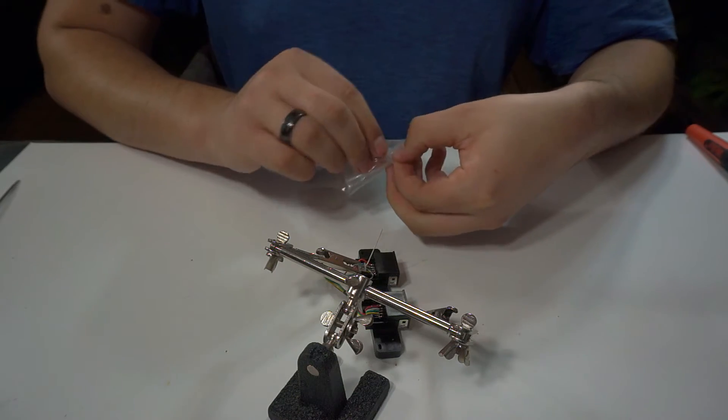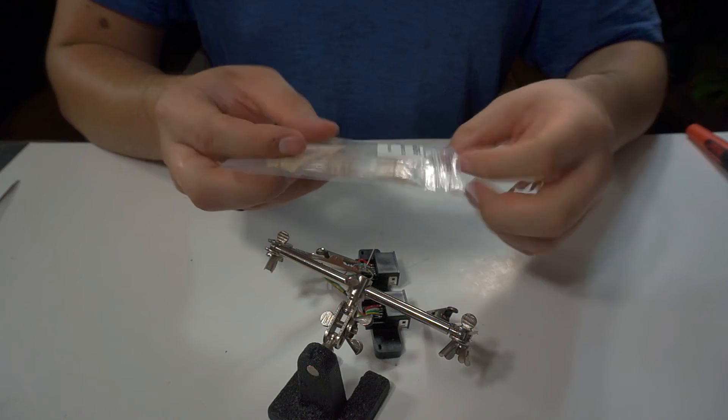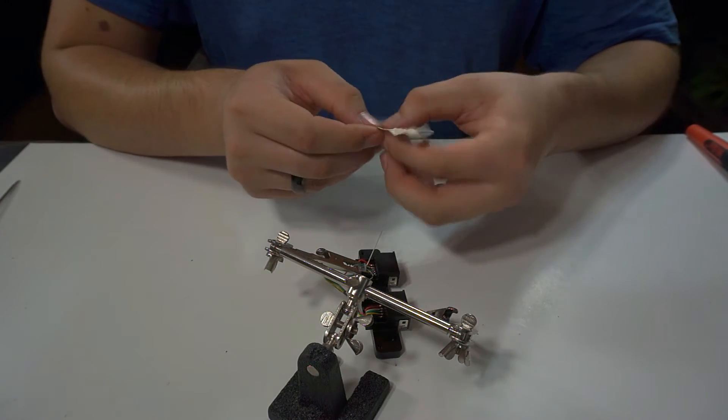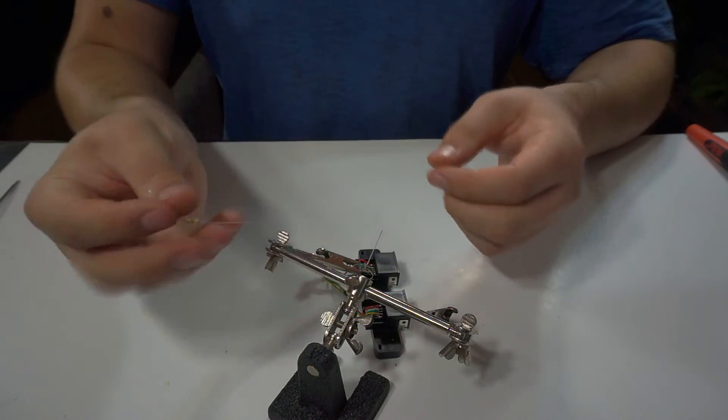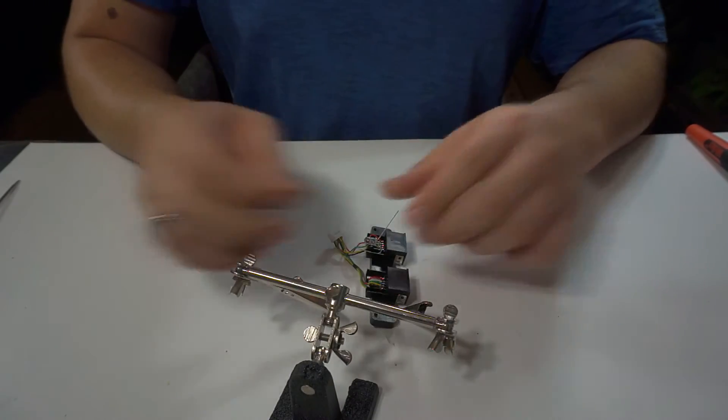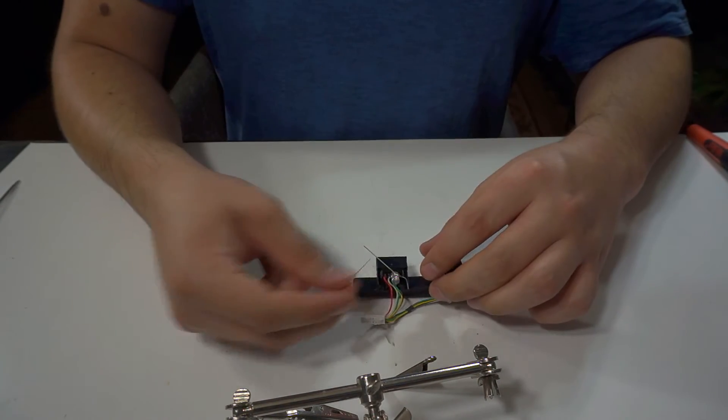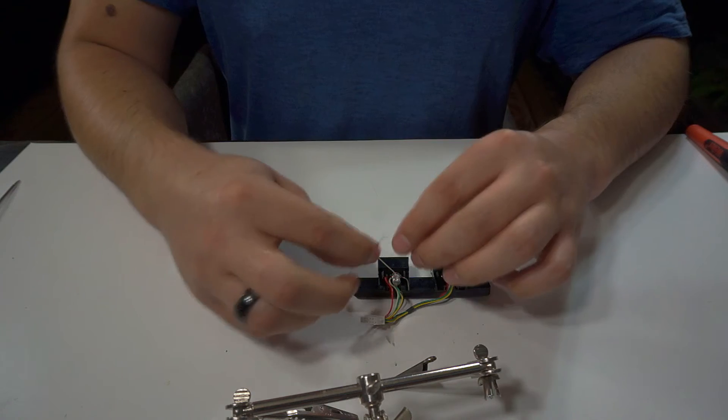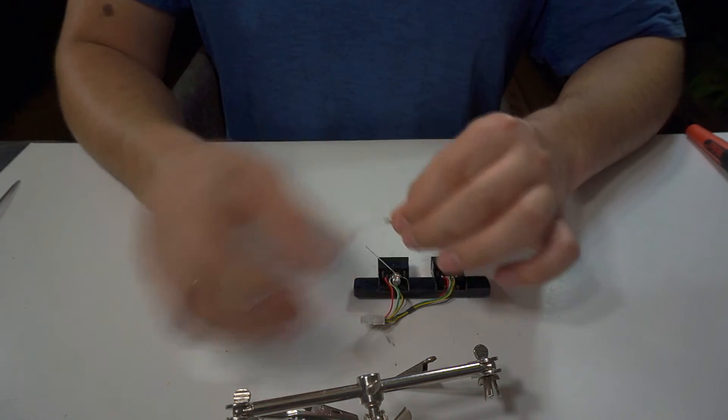Okay, after doing that you're going to want to take your resistor. Again, I'm using the 470 ohm, and you're going to want to attach one side of your resistor, it doesn't matter which side as they don't really have sides, to the red pad slash wire area. So go ahead and do that.